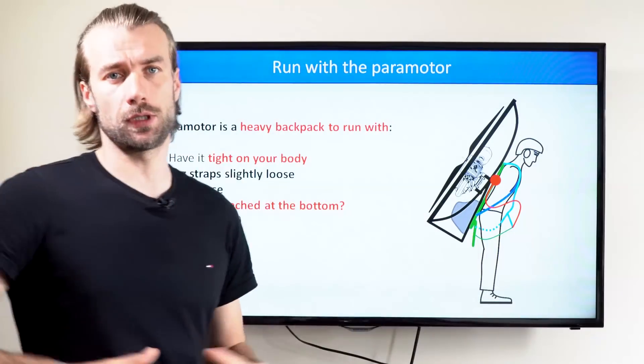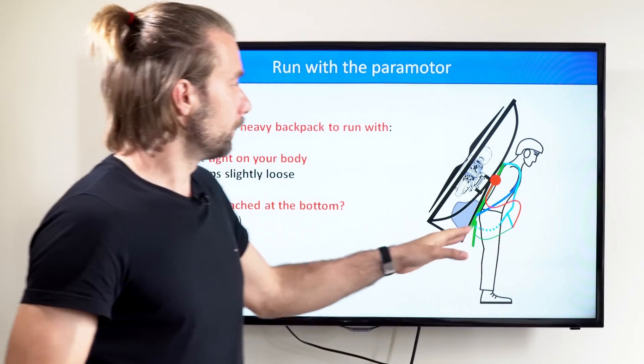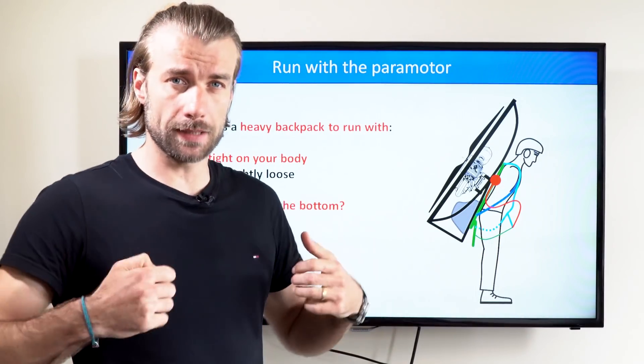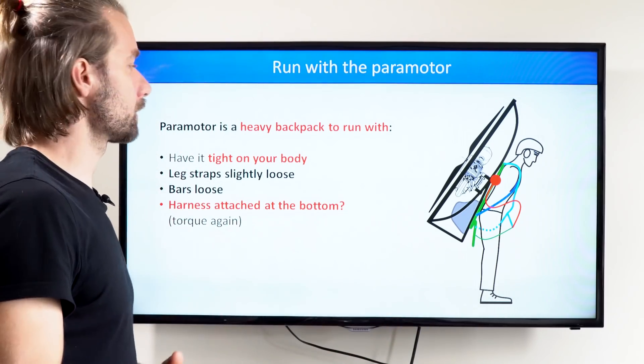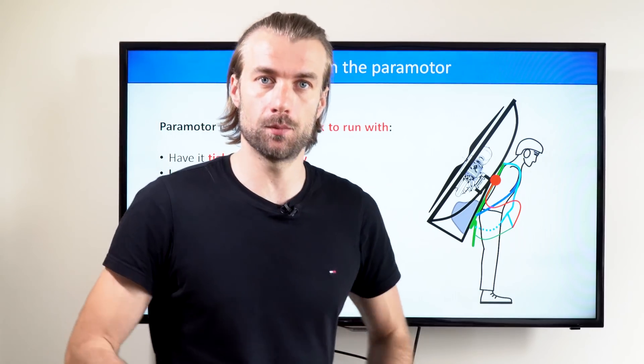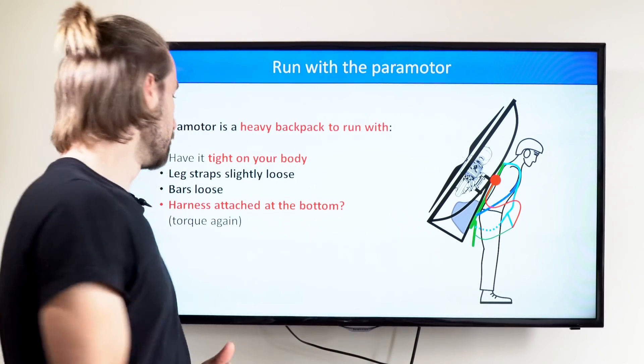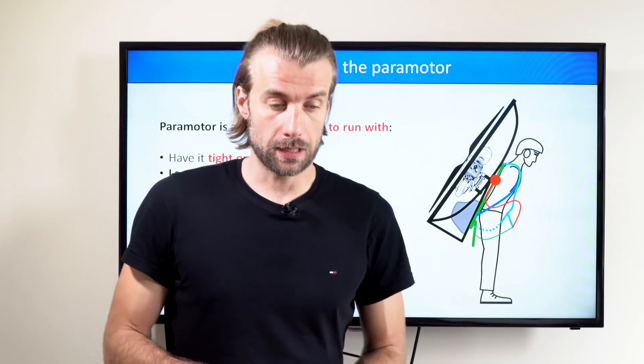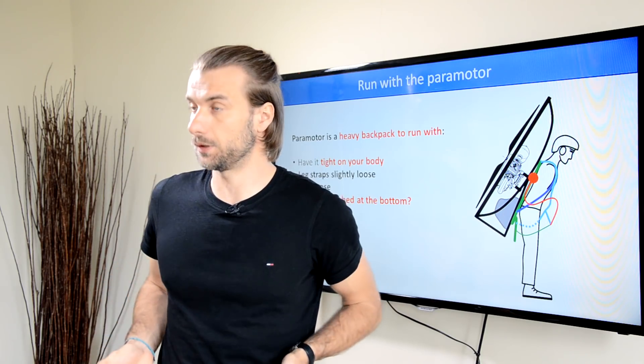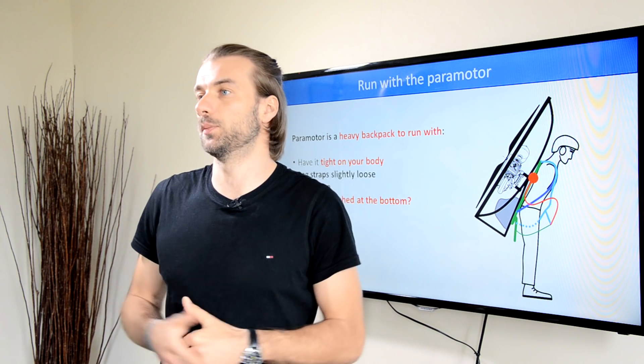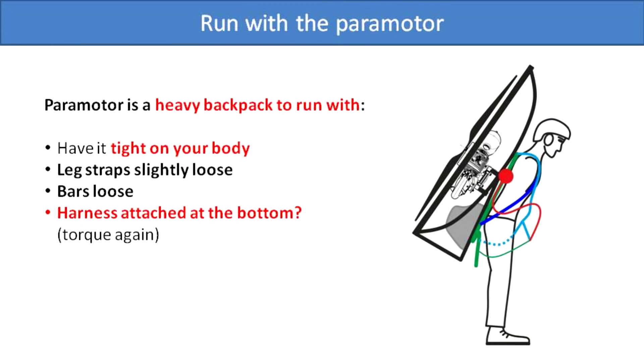So for good running with the paramotor, the backpack strap is really essential. Have it tight, keep the paramotor high on your body, have the leg straps slightly loose so you have free motion of your legs. Have the bars loose, at least until the moment when the glider starts to give you some lift. It will obviously lift the bars up, but at the early stage of running you want to have the bars loose.